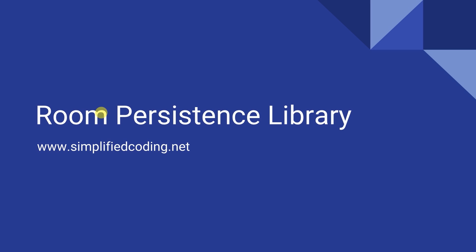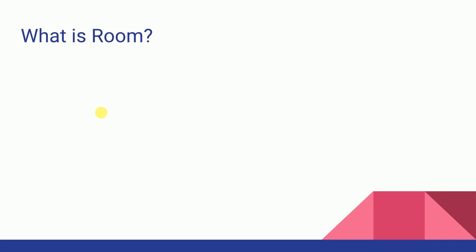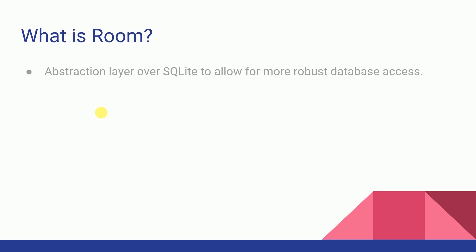Welcome back guys, this is Belal Khan and you are watching Simplified Coding. So let's quickly start with the very first question: What is Room? It is another awesome component of Android Jetpack and it basically is an abstraction layer over the SQLite database, and this layer makes database operations very easy for us.